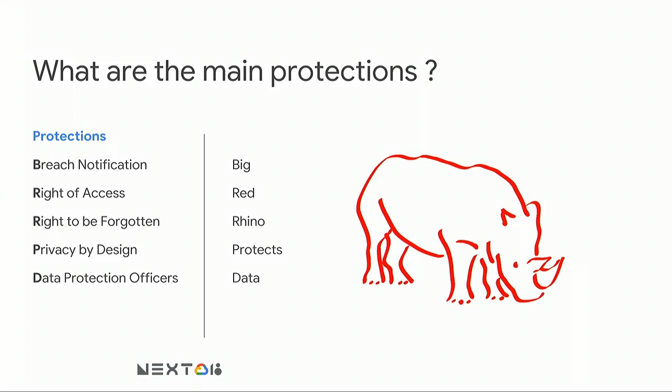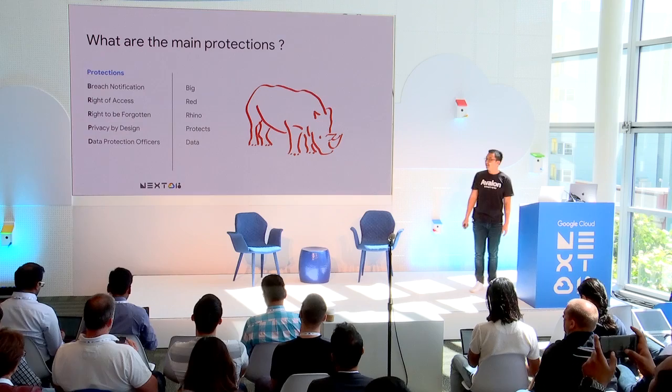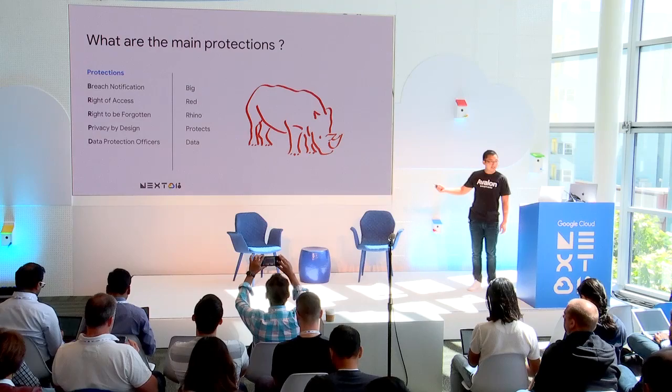What are the main protections given by GDPR to EU citizens? I like to use a mnemonic called 'Big Red Rhino Protect Data.' When you think about GDPR, think about Big Red Rhino: B stands for breach notification, R stands for right of access, the right to be forgotten, privacy by design, as well as data protection officers.